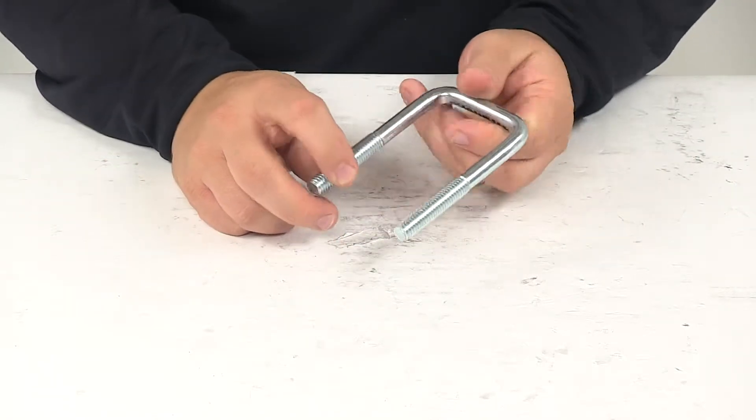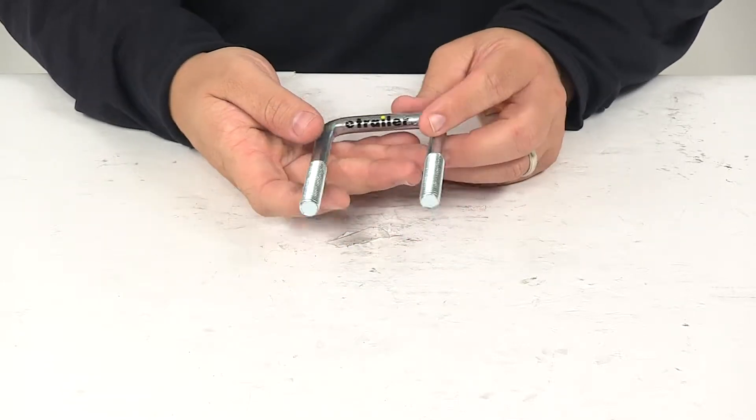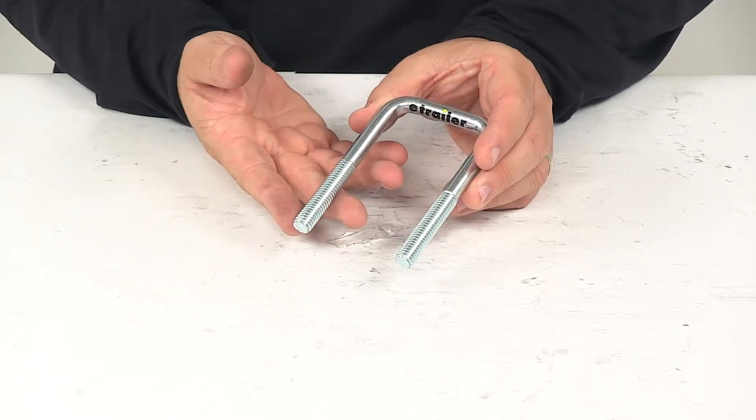Today we're taking a look at the replacement U-bolt for two inch wide square axles. This replacement U-bolt acts as a part of a trailer suspension system.